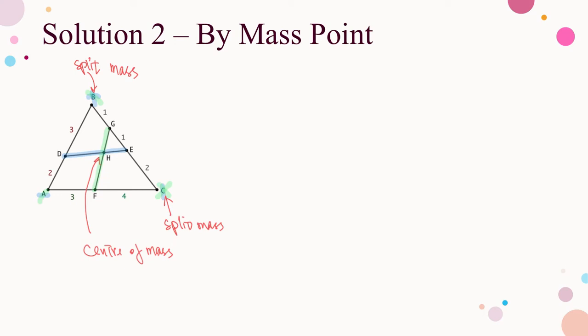By the ratio AD to DB, which is 2 to 3, the mass of A is a multiple of 3. By the ratio AF to FC, which is 3 to 4, the mass of A is a multiple of 4. Take the LCM of 3 and 4 and assign a mass of 12 to A. Then the partial mass of B on side AB is 8 and the partial mass of C on side AC is 9.